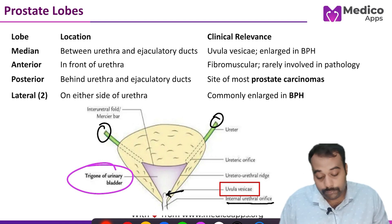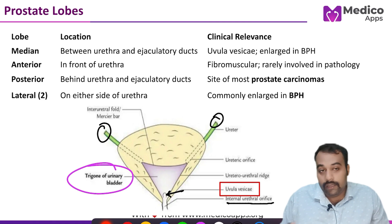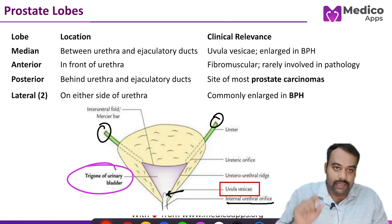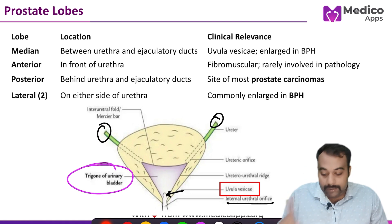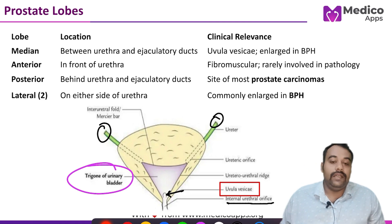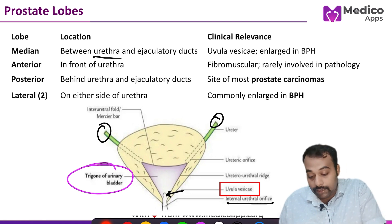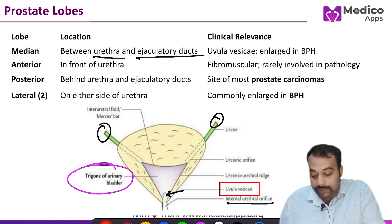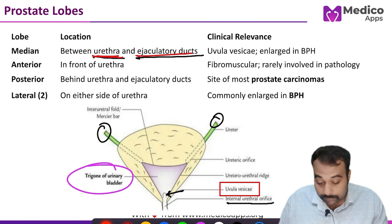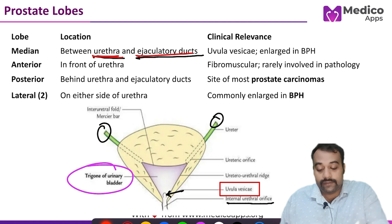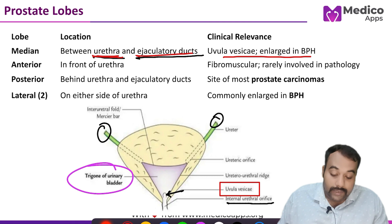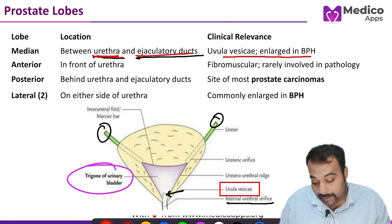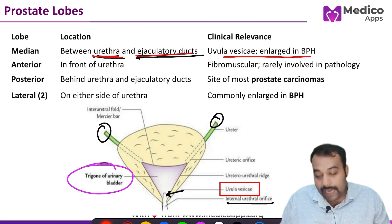Regarding the prostatic lobes and their significance: the median lobe is typically situated between the urethra and the ejaculatory ducts. Its clinical significance is that it forms the uvula vesicae and is enlarged in BPH.